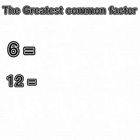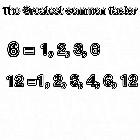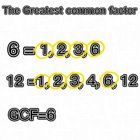Let's find the GCF for 6 and 12. The factors of 6 are 1, 2, 3, and 6. The factors of 12 are 1, 2, 3, 4, 6, and 12. The common factors between 6 and 12 are 1, 2, 3, and 6. The greatest number of them all is 6, so the GCF will be 6.